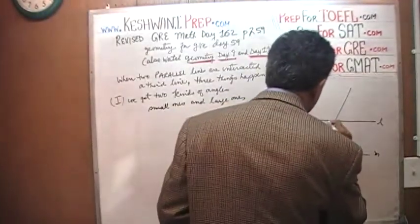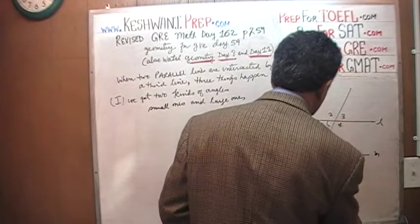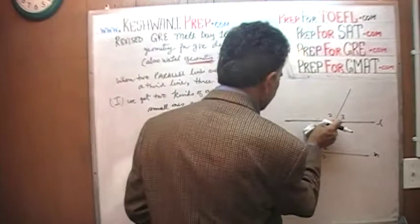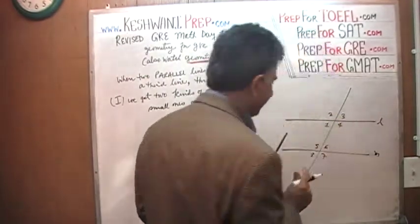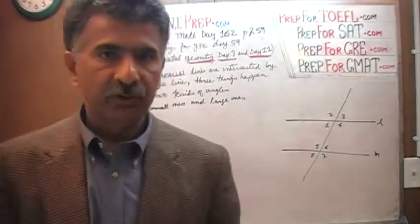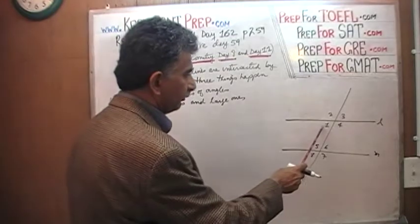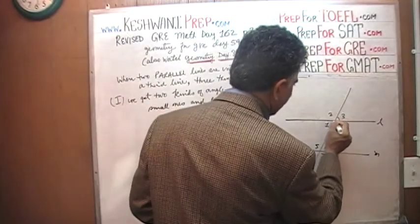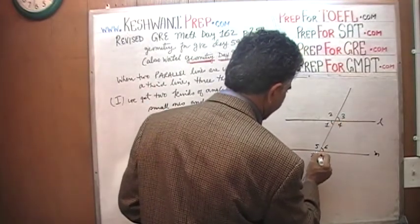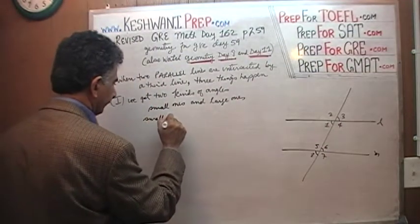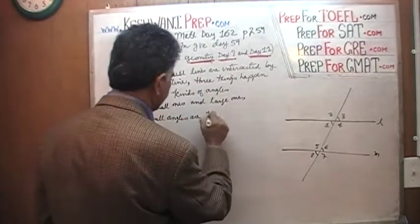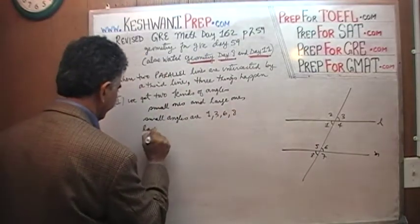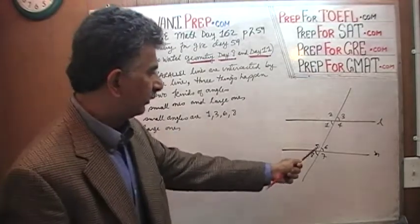Let's number the angles. Going clockwise: 1, 2, 3, 4 at the first intersection, and 5, 6, 7, 8 at the second. You should be able to see that angle 3 is a small angle and so is angle 1. Angle 6 is a small one and so is angle 8. So the small angles are 1, 3, 6, and 8. The large ones are the rest: 2, 4, 5, and 7.